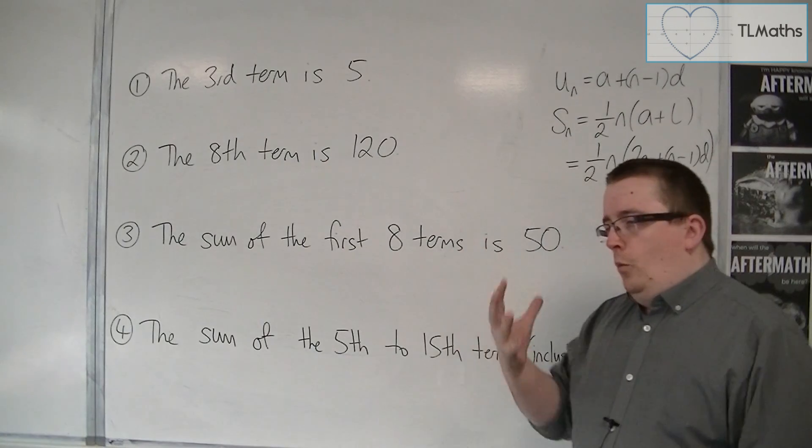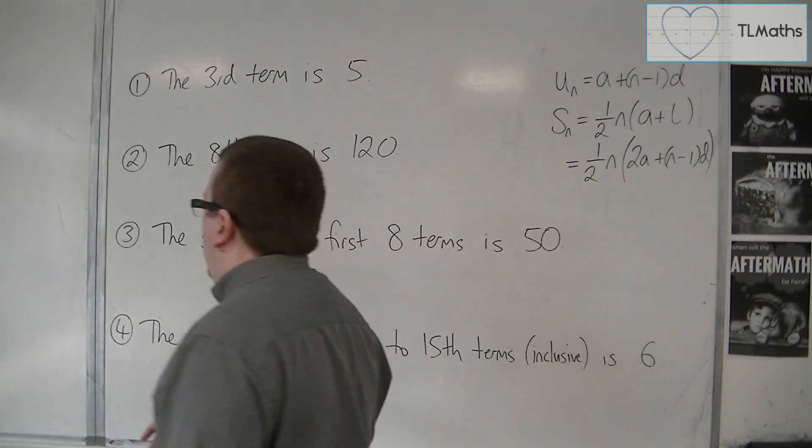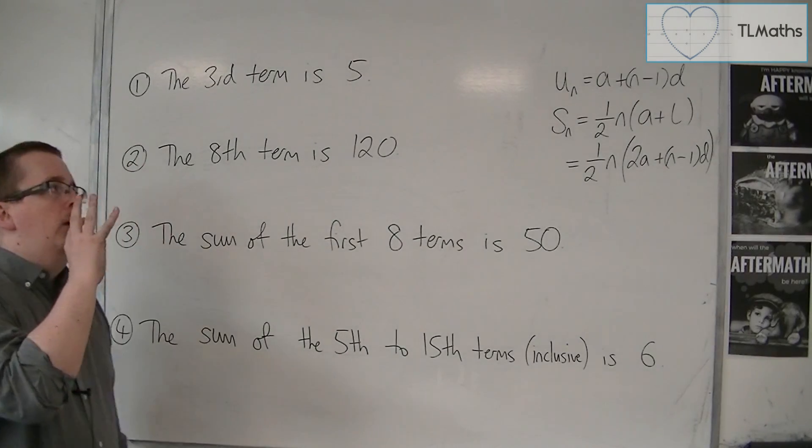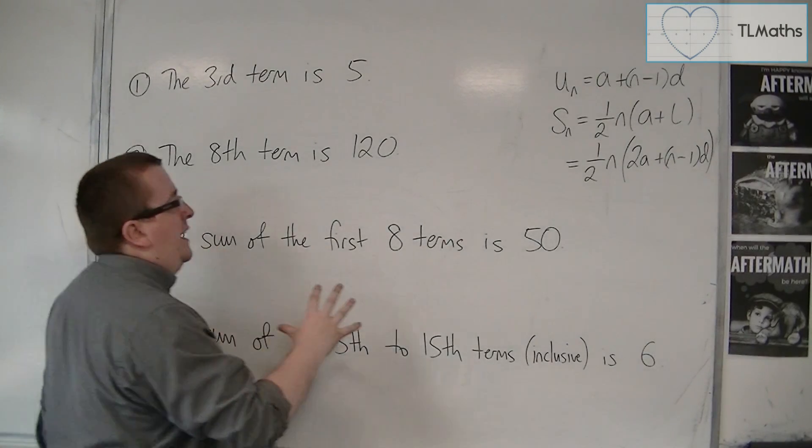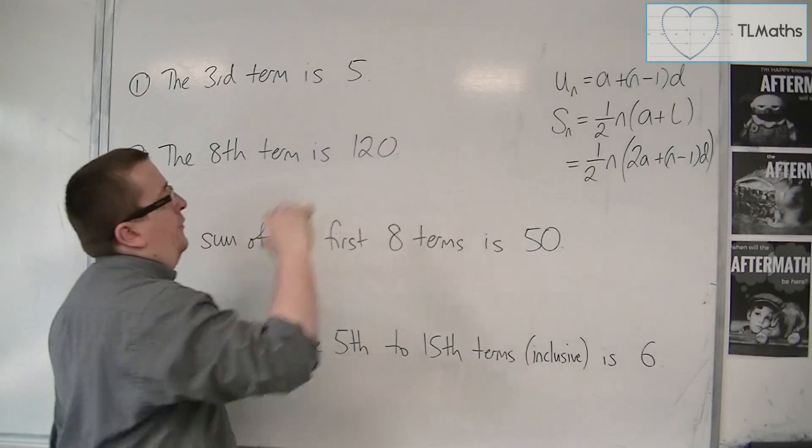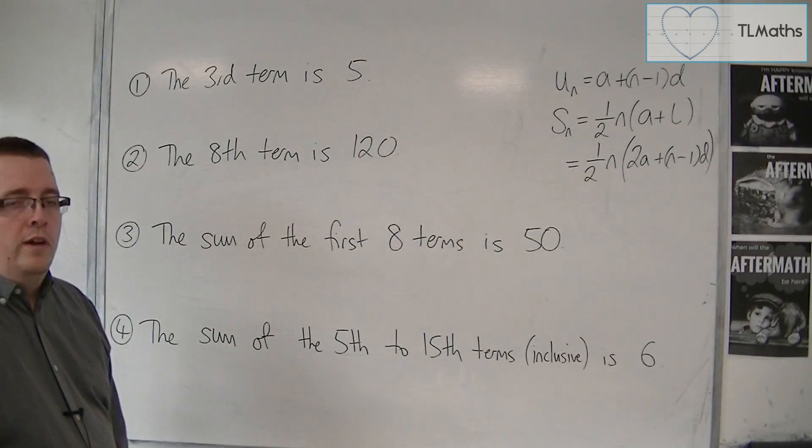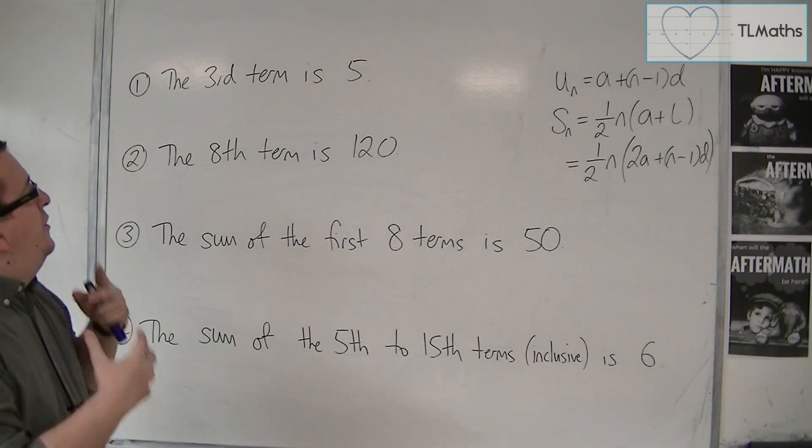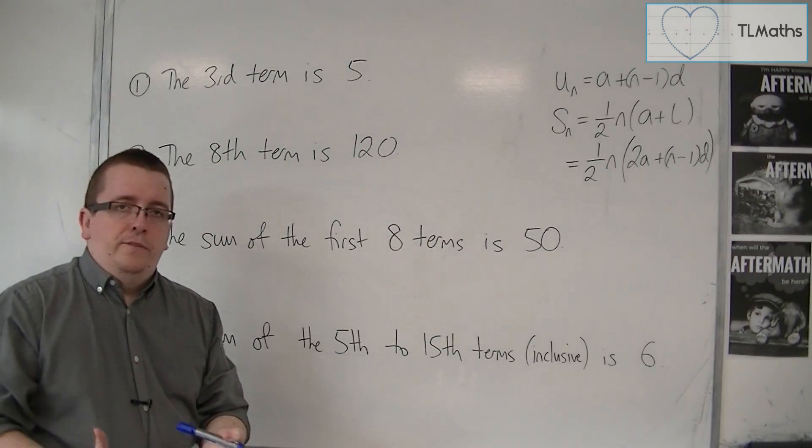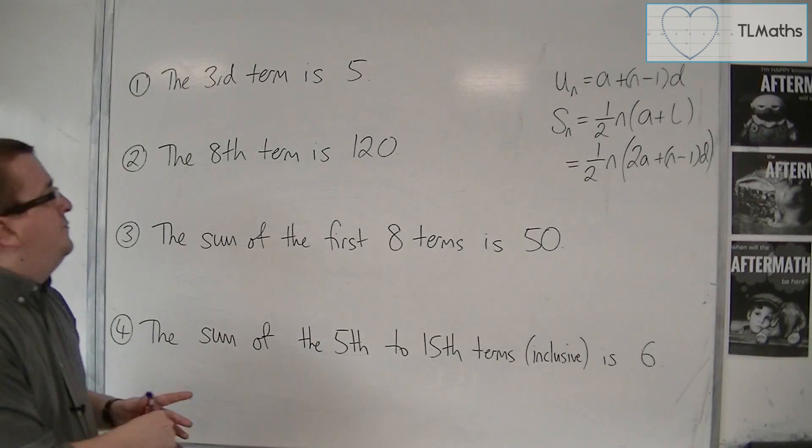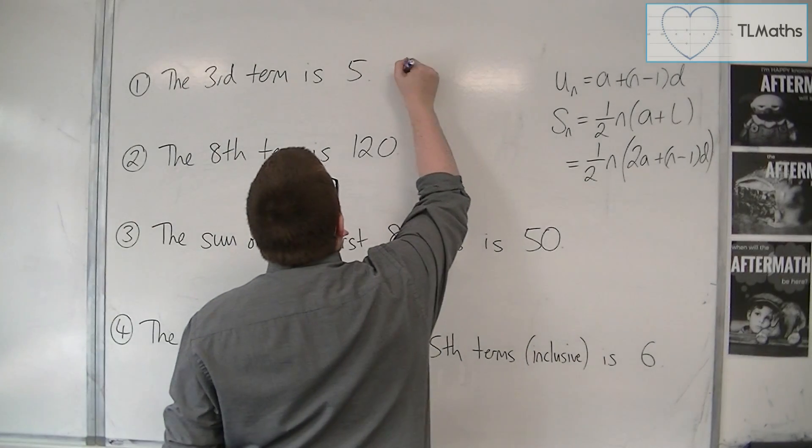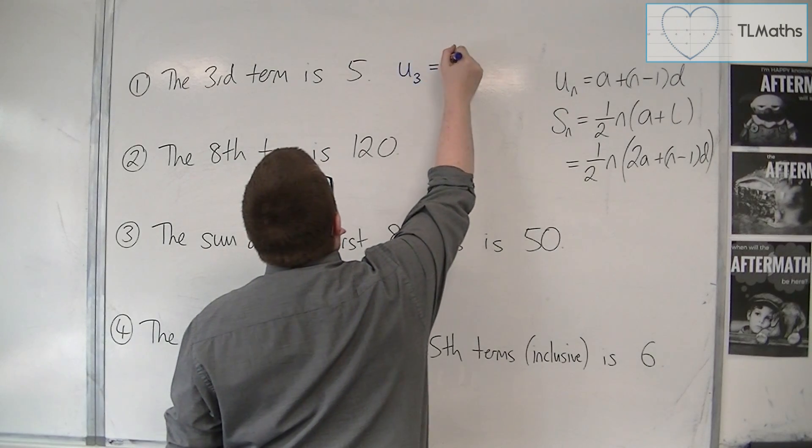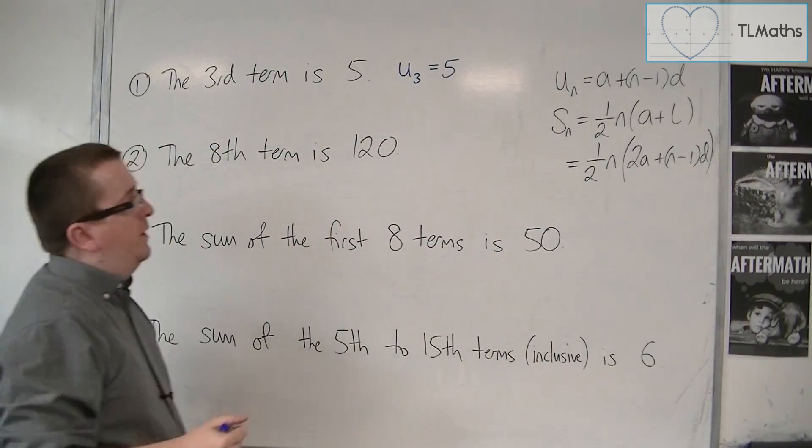What I need to point out at the start is that all of these are arithmetic. So in each of these cases, we'll be using these formulas that we have worked with before. First of all, the third term is five. What does that mean? Well, in shorthand, you can say the third term U3 is equal to five. That is what it is saying.